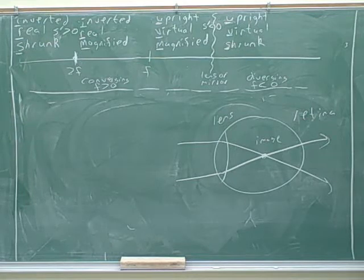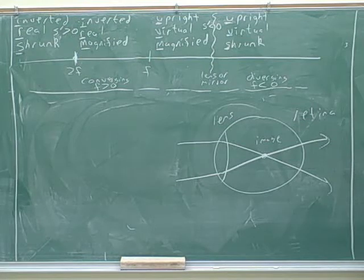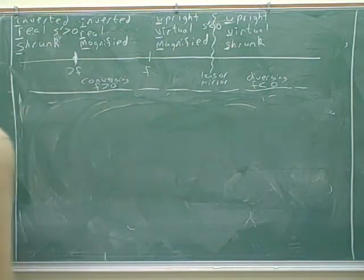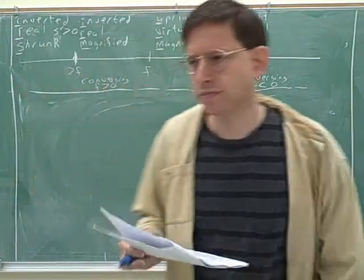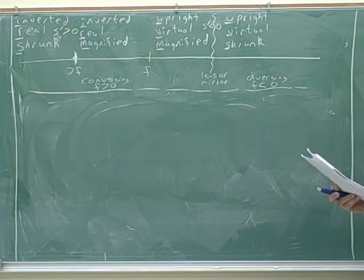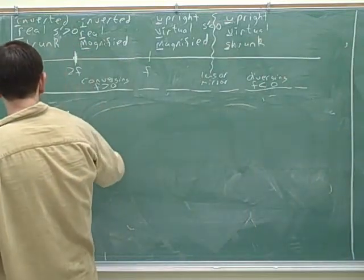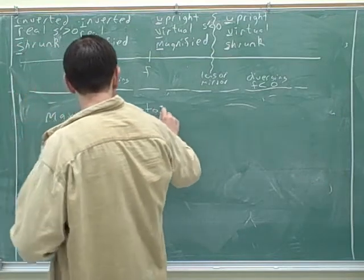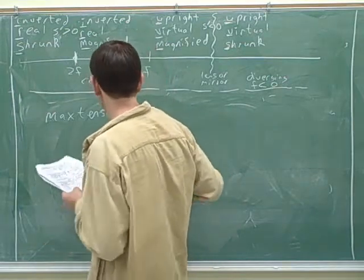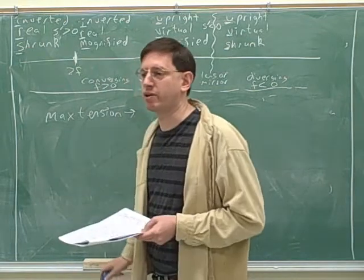So they give you the far point and the near point. Should I set up the near equation? Sounds good. At maximum tension — depending on the condition — I want either the far one or the close one, so I only use one of them. Which one? Maximum tension would make the eye rounder, right?